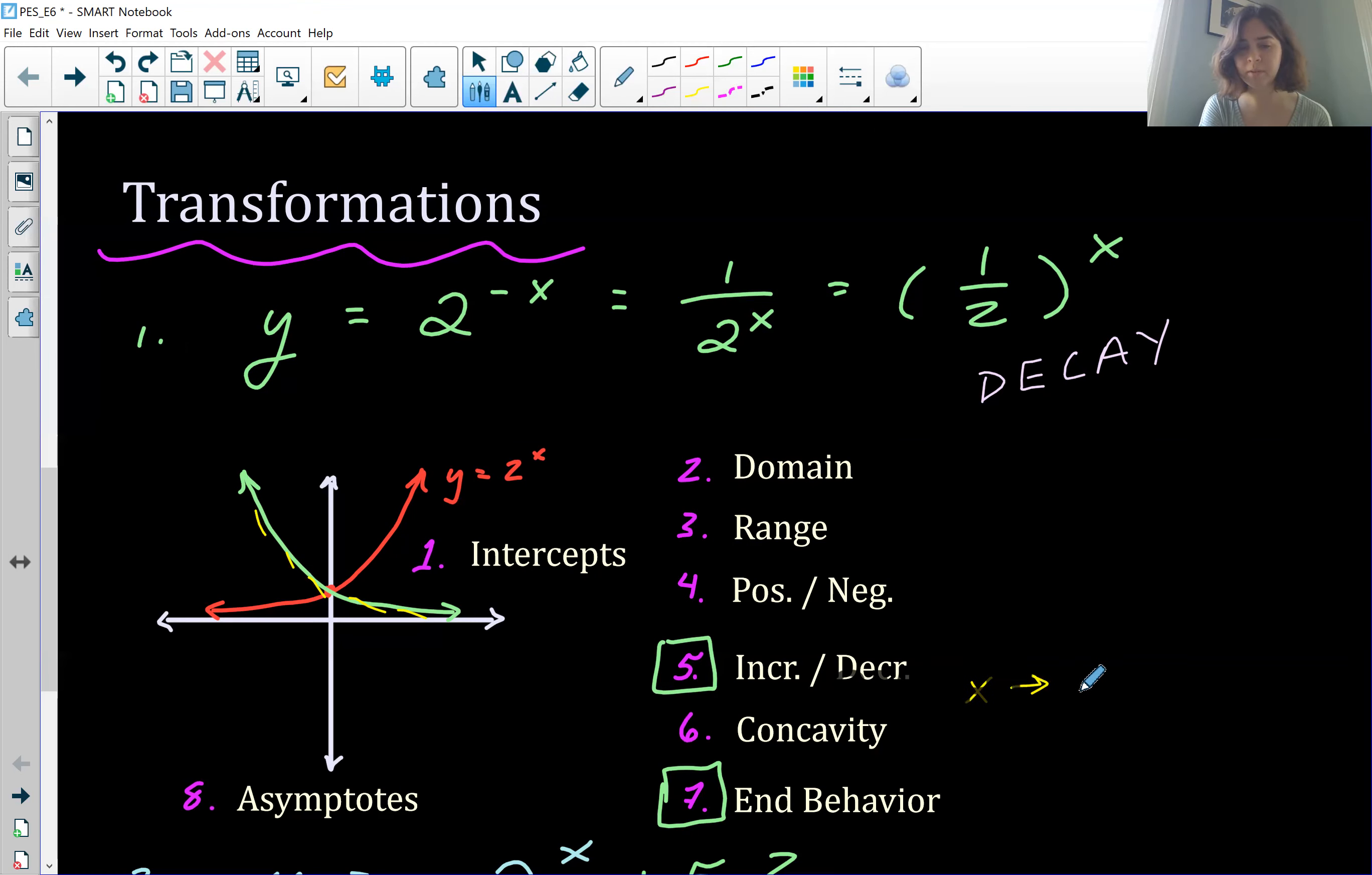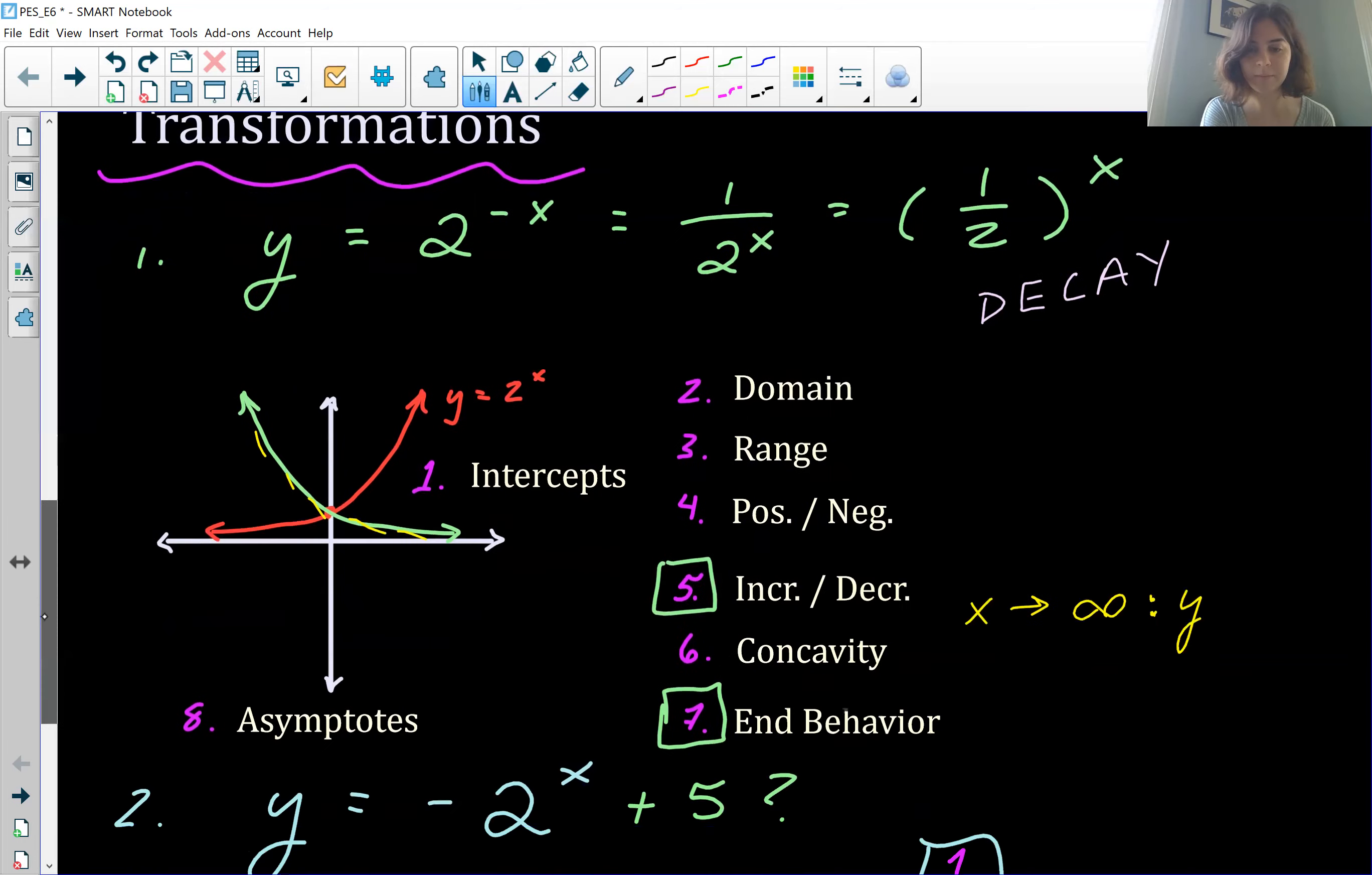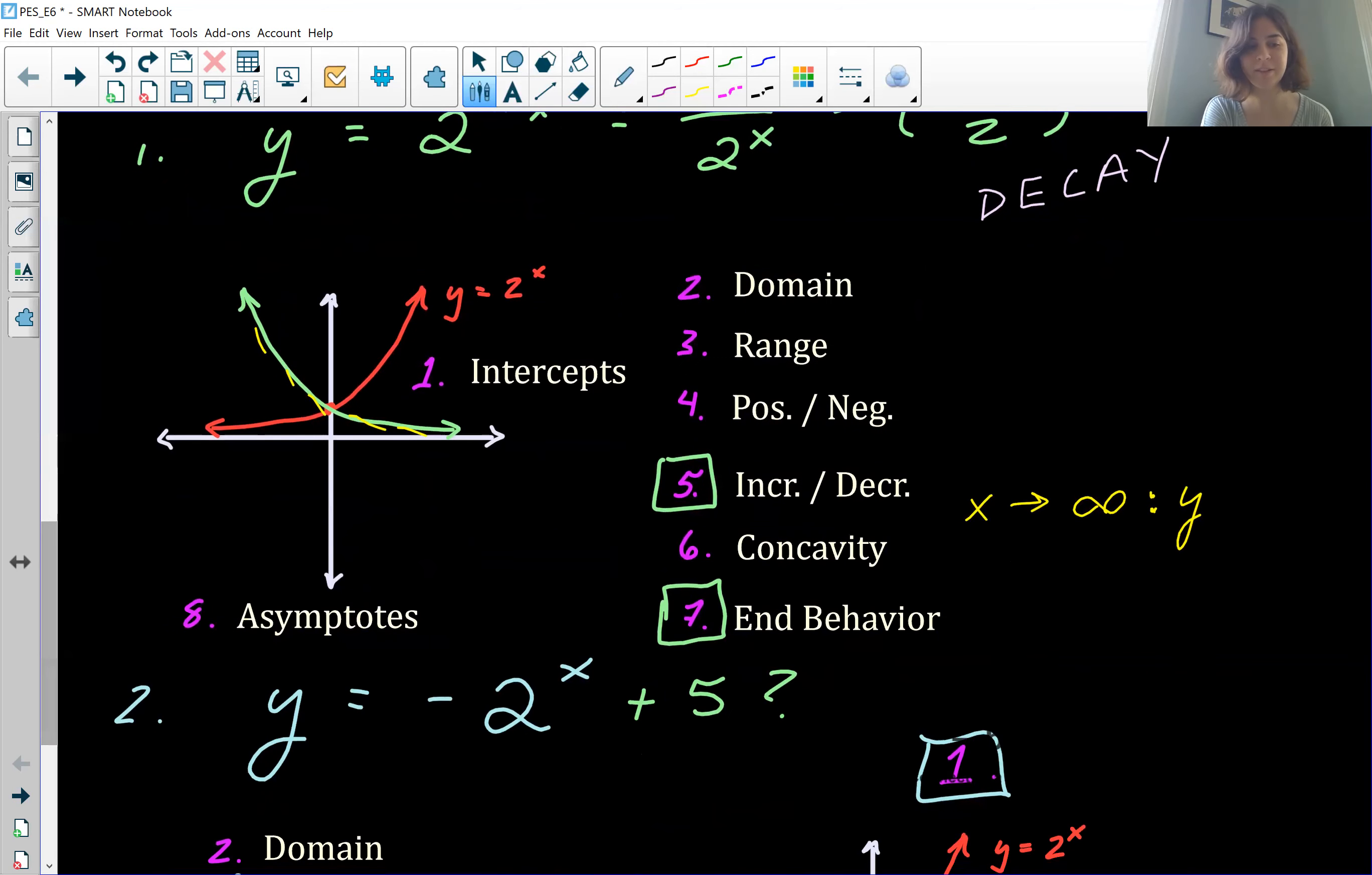It's mainly just flipped. So as x approaches infinity, y is going to approach zero. So that's a little bit different. And as x approaches negative infinity, y is going to approach positive infinity.